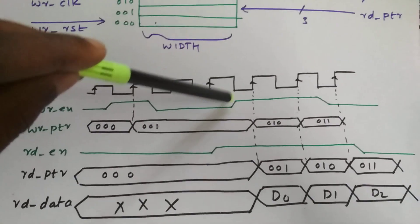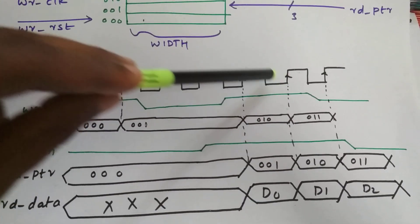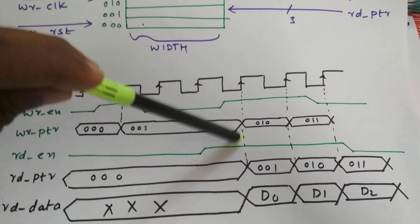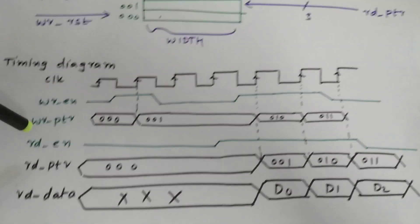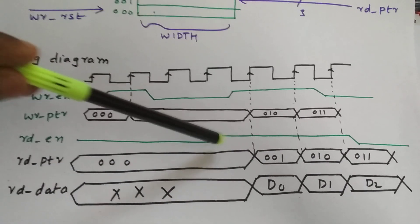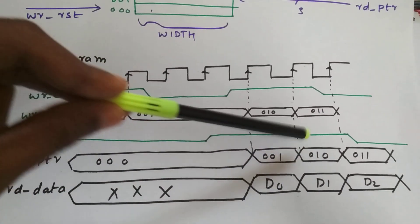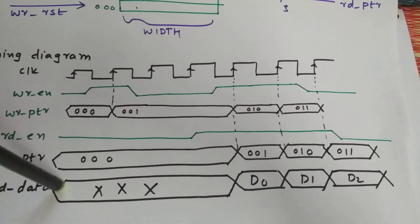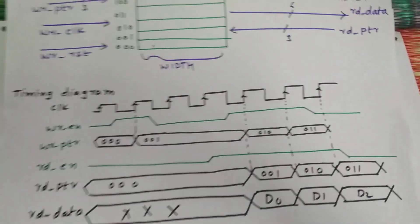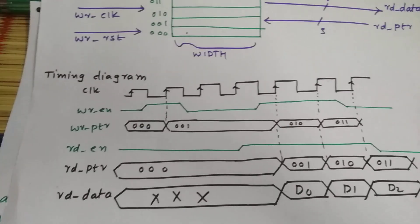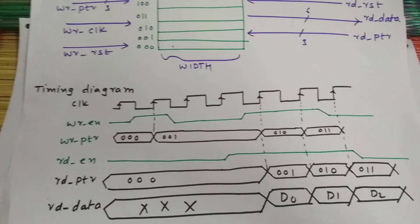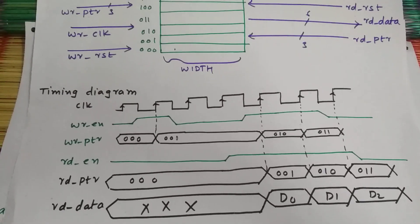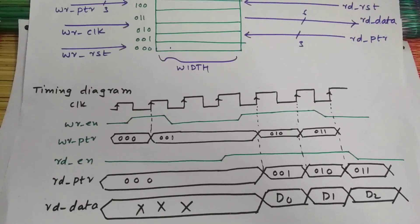We have incremented it one. Again the write enable is high for three clock cycles, two clock cycles, and we have incremented it twice. Similar case with read enable - it's high for three clock cycles. We have incremented it one, two, three, and we are taking the data: data zero, data one, data two. This is how a basic synchronous FIFO works.